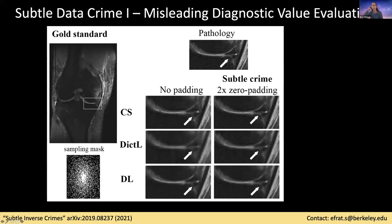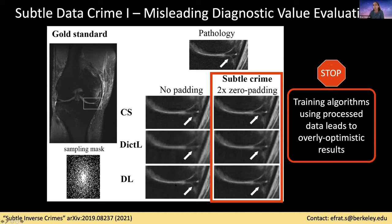Here is another example from the FastMRI database for fat-saturated data. The networks were trained on such data and tested with an image containing pathology. You can see the ground truth of the pathology on the top. On the left column, you see reconstruction results in the correct scenario with no data processing — the pathology is quite blurred and hard to see, for all three algorithms. But in the subtle data crime case, where the same algorithms were trained and tested on processed data, the pathology becomes much sharper. This is due to the combined effect of the early data zero-padding and the later retrospective subsampling using a variable density mask. This shows that training algorithms on processed data leads to overly optimistic results even for pathology cases.